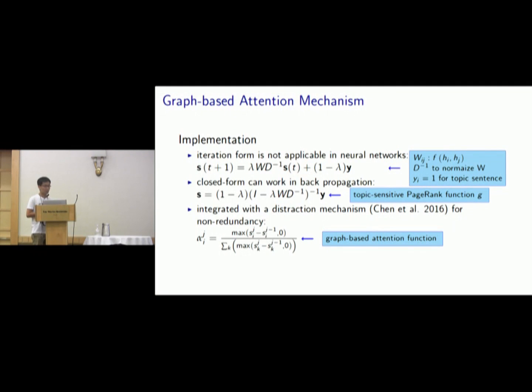There are also several implementation issues in the graph-based attention mechanism. The iteration form of PageRank is not applicable in neural networks. So we solve this by using the closed form instead that can work in backpropagation. And this is our topic-sensitive PageRank function. We further integrate it with a distraction mechanism for non-redundancy. And here comes our final graph-based attention function.